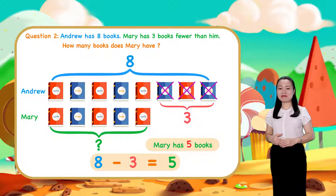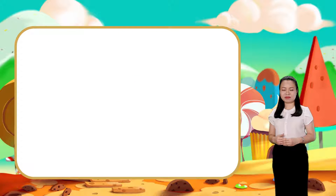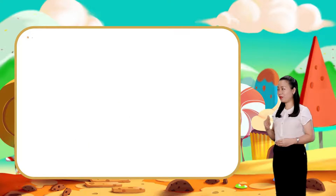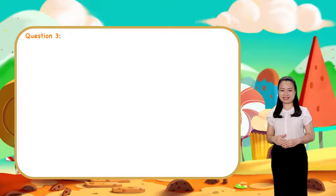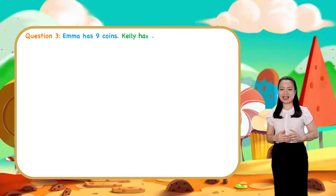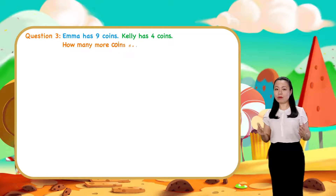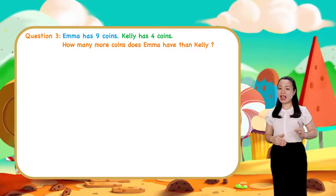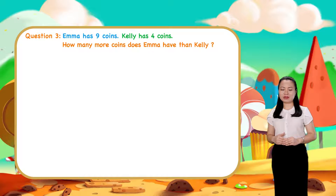Now take a break for a while and then we move on to question 3. Emma has 9 coins. Kelly has 4 coins. How many more coins does Emma have than Kelly? I'll give you some time to find the answer for yourself.